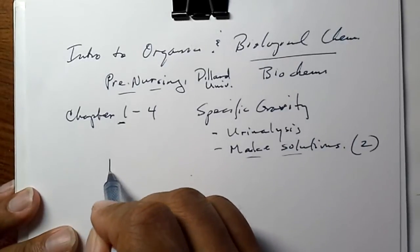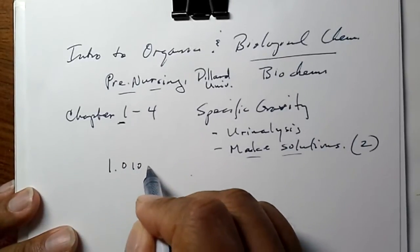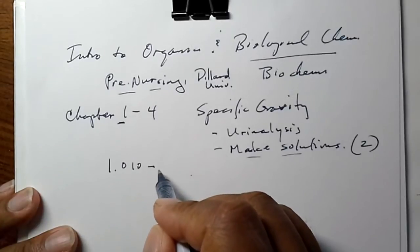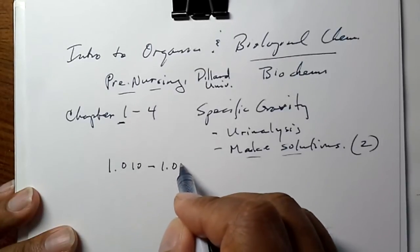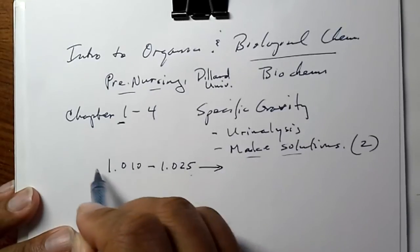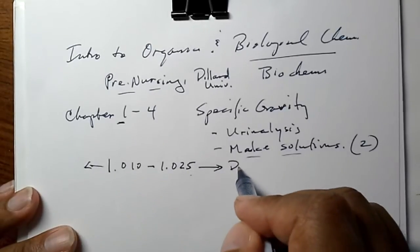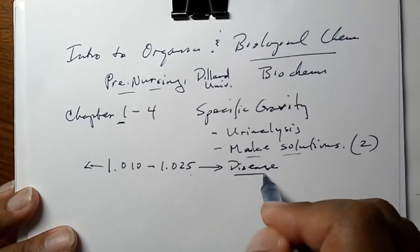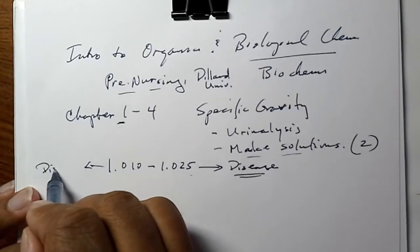Normal specific gravity is about 1.010 to 1.025. Anything outside these ranges is an indication of some type of disease.